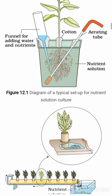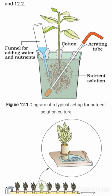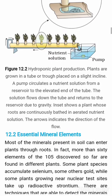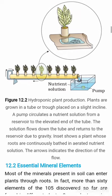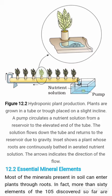Figure 12.1 shows a diagram of a typical setup for nutrient solution culture, and figure 12.2 shows hydroponics plant production. Plants are grown in a tube placed on a slight incline. A pump circulates a nutrient solution from a reservoir to the elevated end of the tube. The solution flows down the tube and returns to the reservoir due to gravity. The plant's roots are continuously bathed in aerated nutrient solution. The arrows indicate the direction of flow.